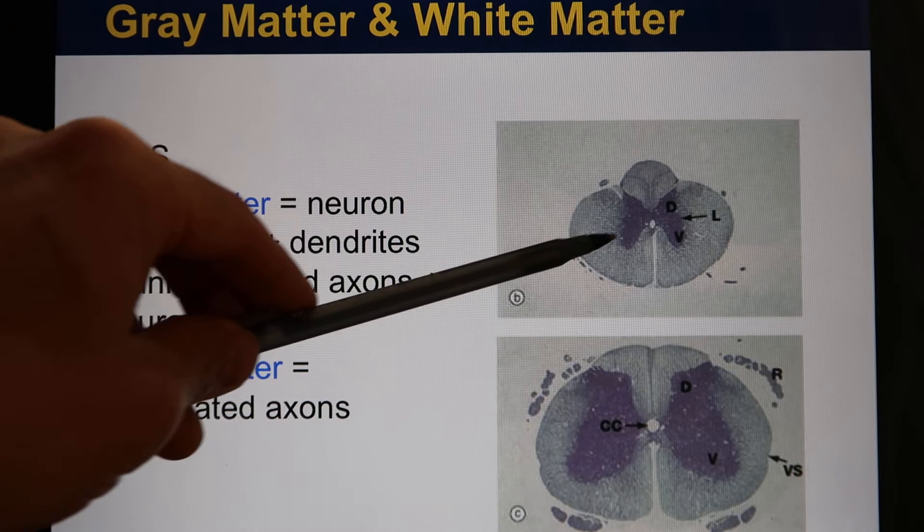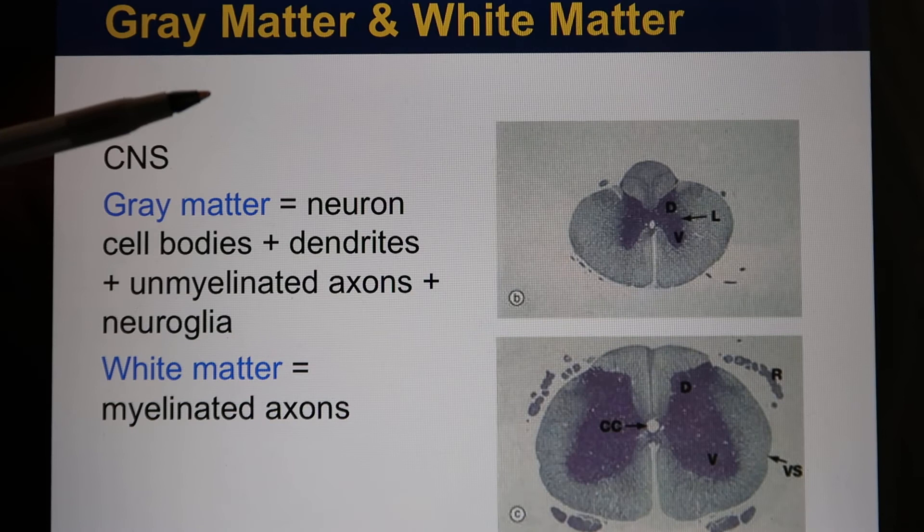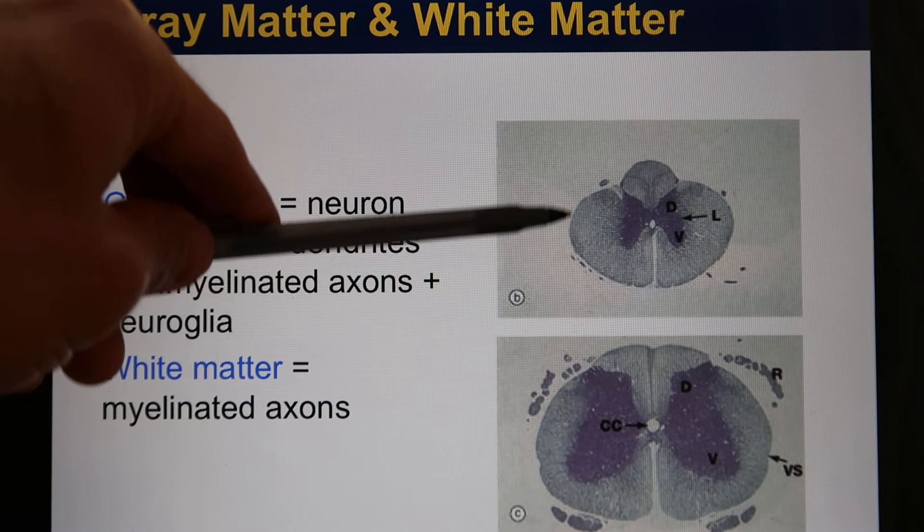When you cut the spinal cord, the inside is gray matter, which looks gray because it contains the cell bodies and dendrites. The outside looks white — we call it white matter — because it consists of myelinated axons.